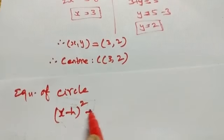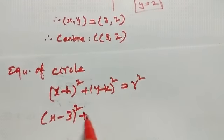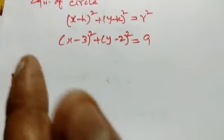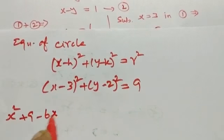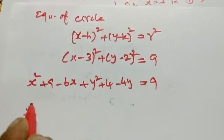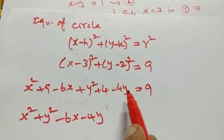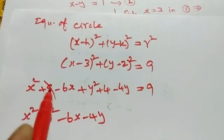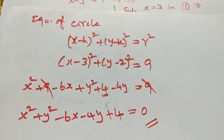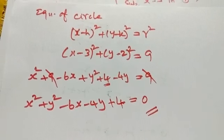Equation of circle: (x minus 3)² plus (y minus 2)² equal to 9. Expanding: x² plus y² minus 6x minus 4y plus 9 equal to 9. x² plus y² minus 6x minus 4y plus 4 equal to 0. Therefore the required equation of the circle is x² plus y² minus 6x minus 4y plus 4 equal to 0.